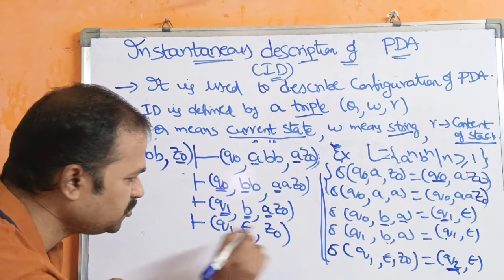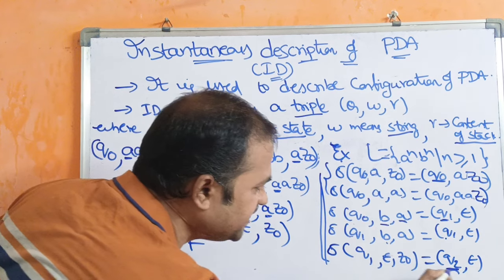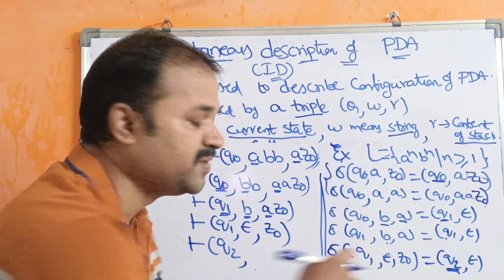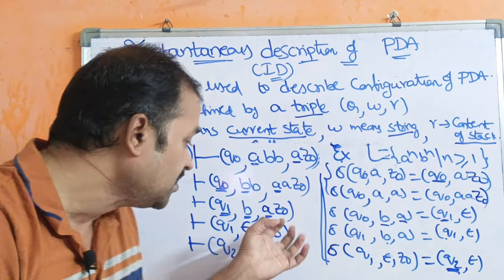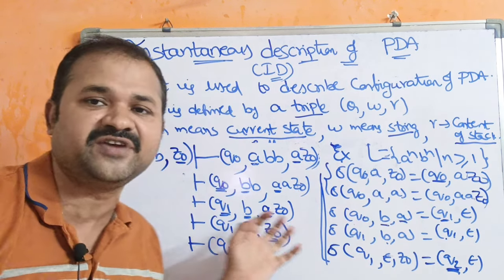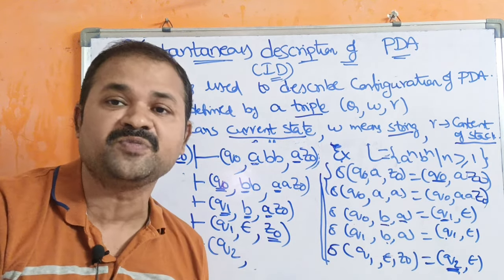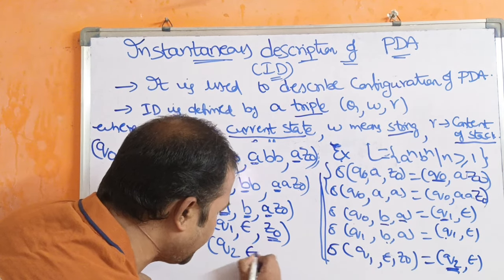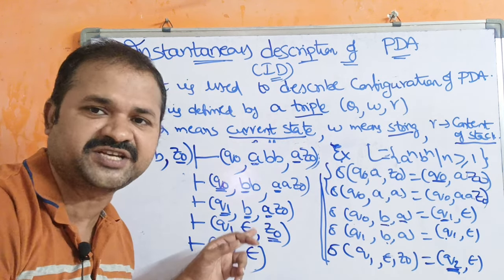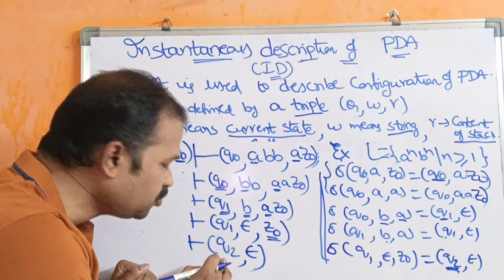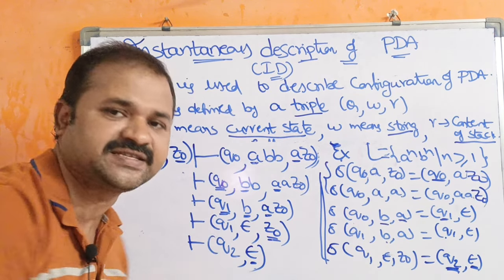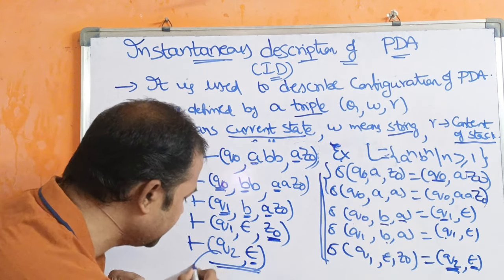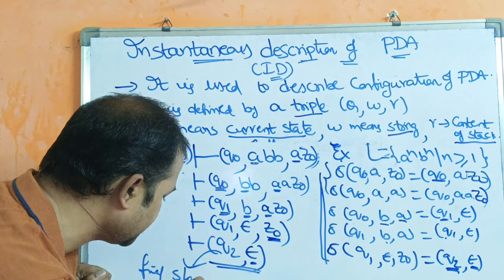Now (Q1, epsilon, Z0) means we change the state from Q1 to Q2, which is the final state. We perform a pop operation — Z0 is popped — so the stack is now empty (epsilon). We then have (Q2, epsilon), where epsilon specifies the stack is empty. So we got Q2 — the final state.